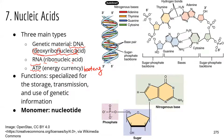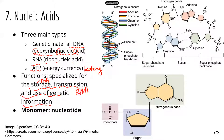The general functions for nucleic acids are storage, transmission, and use of genetic information. Storage of genetic information is really about DNA — DNA is the genetic blueprint. Transmission and use of genetic information is more about RNA. If you've taken biology before and learned about transcription and translation, you know that DNA and RNA perform a very critical role in those two processes.